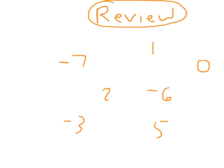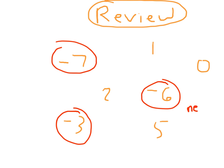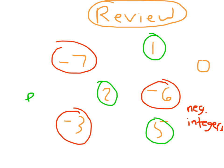Let's review. Point at all the negative integers — hopefully you're pointing at the correct ones. Those are our negative integers. Now point at all of the positive integers on the screen — those are our positive integers. Positive integers are 1, 2, 3, 4, 5, 6, 7, 8, 9, 10, and so on. Negative integers are negative 1, negative 2, negative 3, negative 4, negative 5, negative 6, negative 7, and so on. Do our integers include 0? Yes — our whole set includes 0 as well.